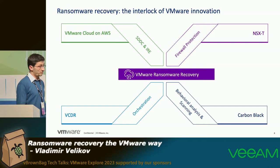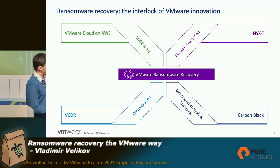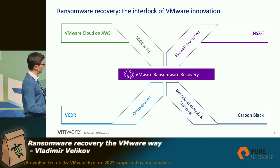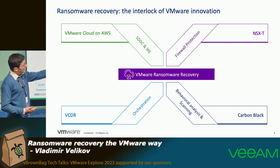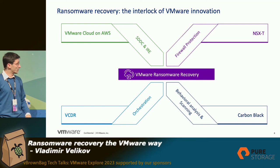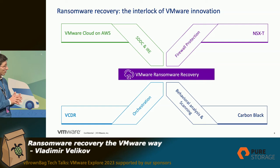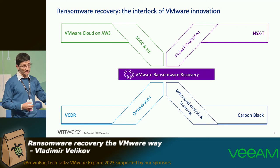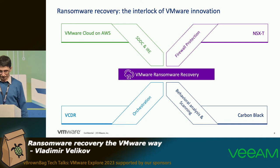VMware Live Recovery is an intersection of many different VMware products: VMC on AWS with the IRE, firewall rules from NSX-T, security scanning and behavioral analysis from Carbon Black, all brought together through VCDR. This is a combination of all these innovations into one solution, but it doesn't mean you have to buy each piece separately — you get ransomware recovery and all the other components are included.